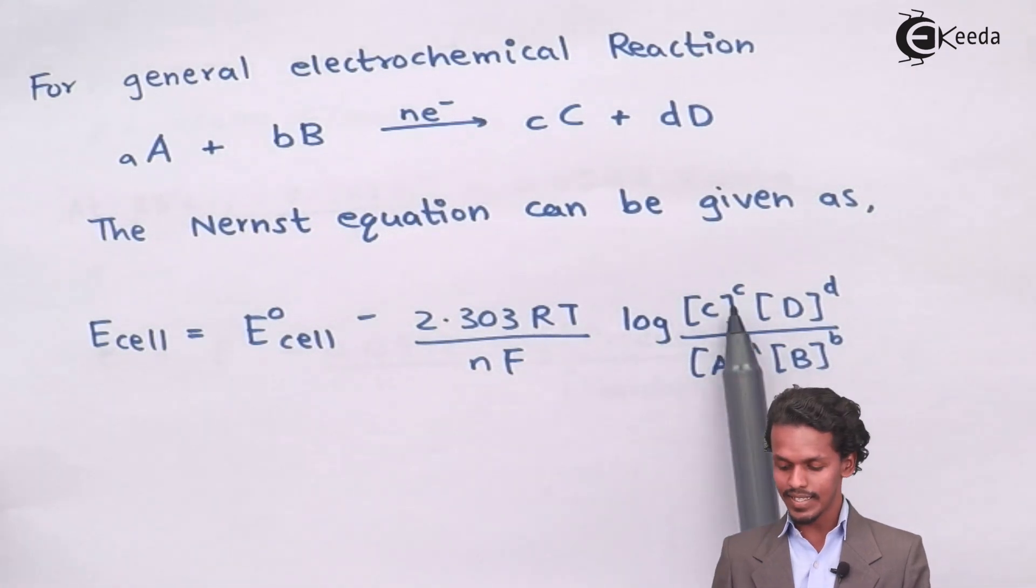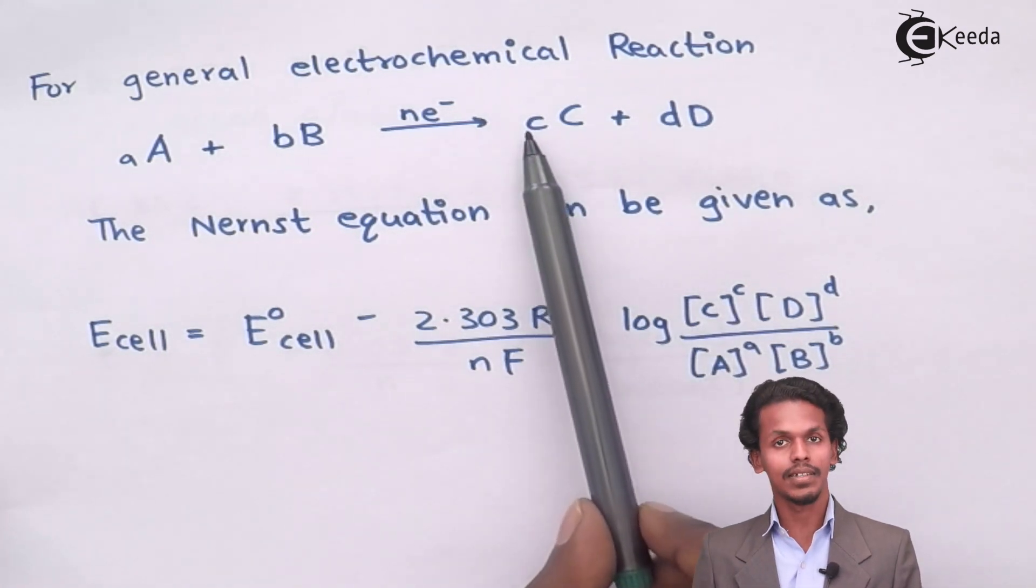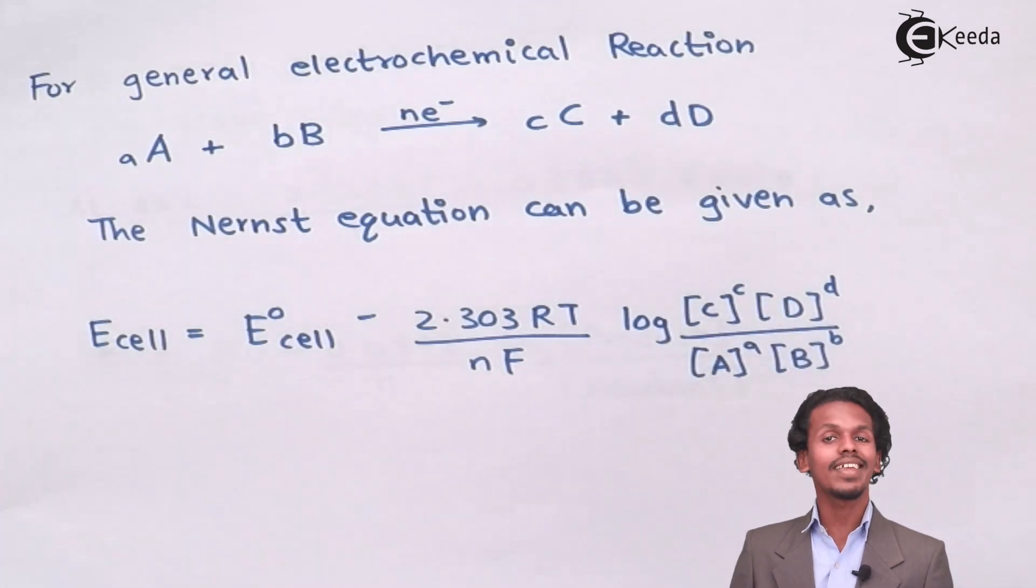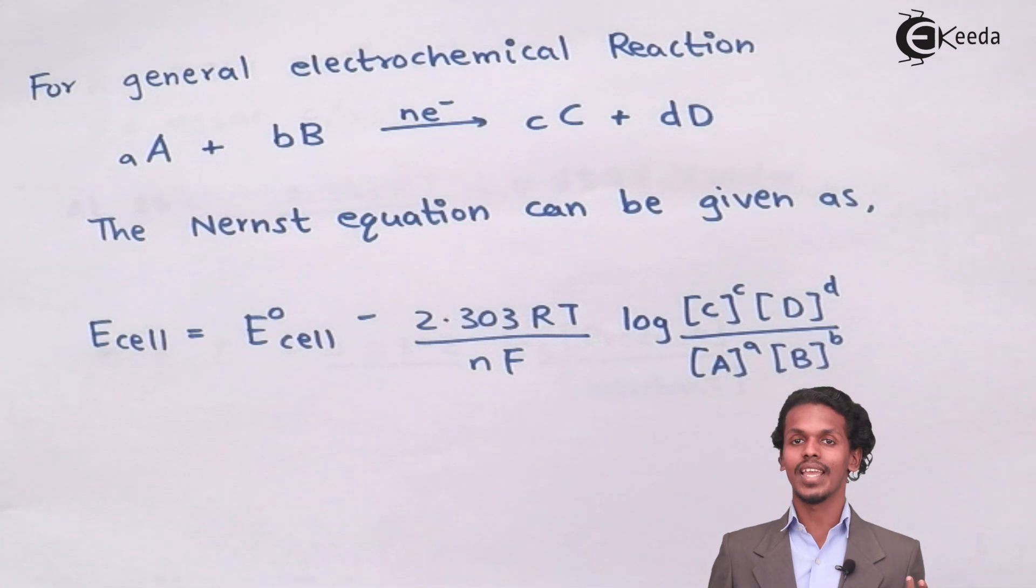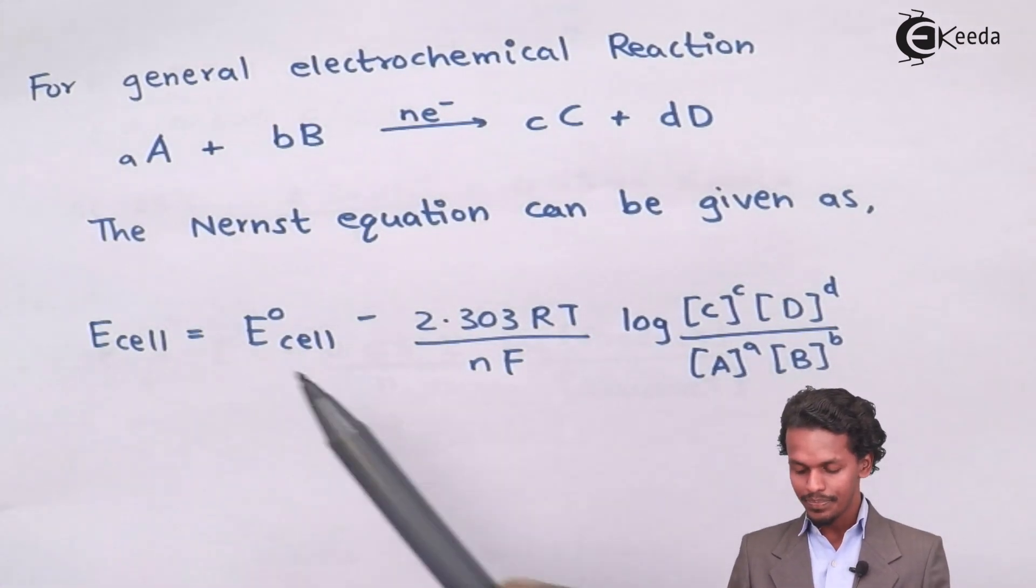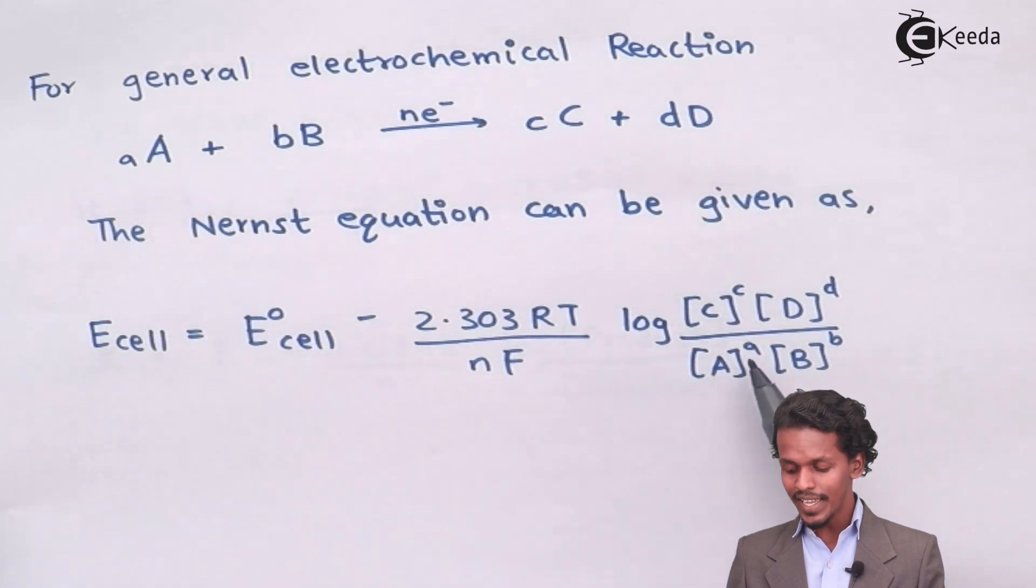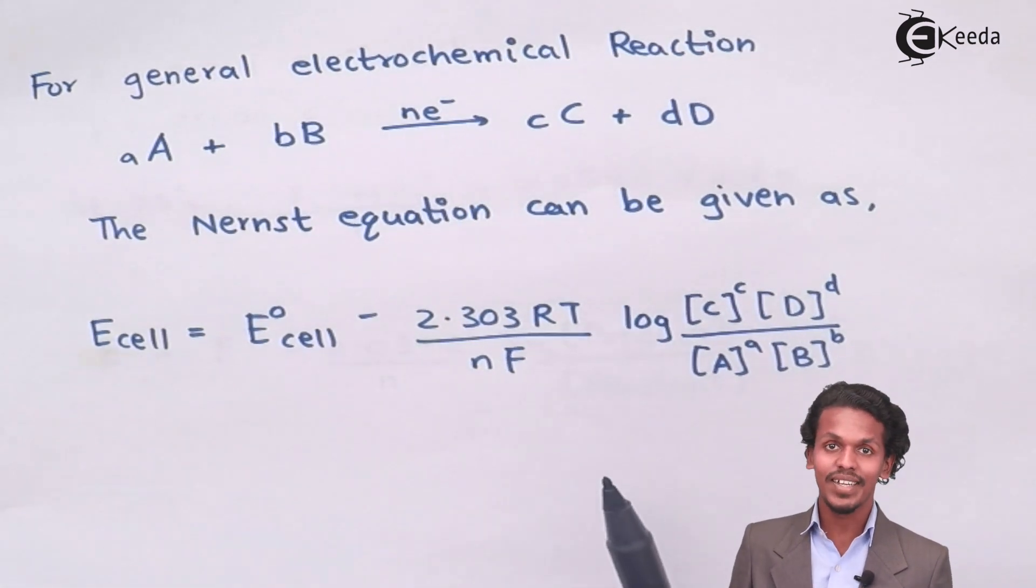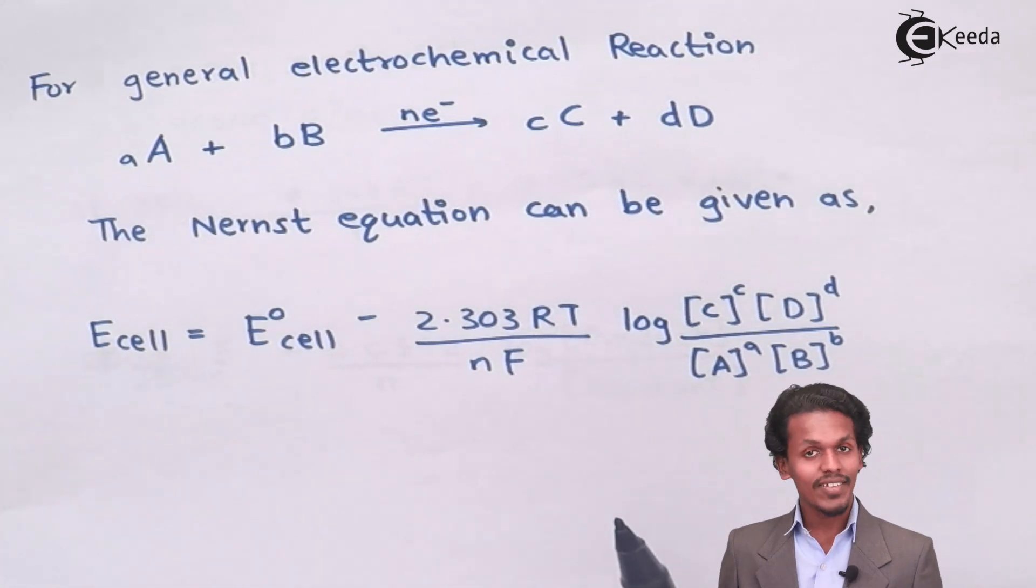the stoichiometry, this is the stoichiometry of the product C, while concentration of D raised to d. This is similar to chemical equilibrium that we did in our 11th standard. So divide by the concentration of A raised to a and concentration of B raised to b.